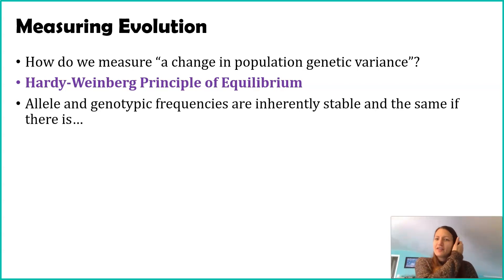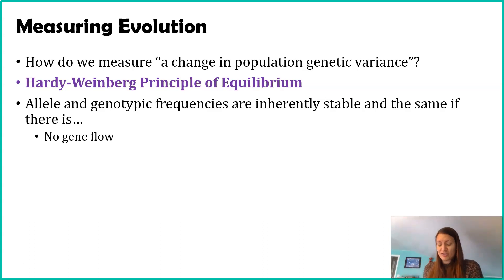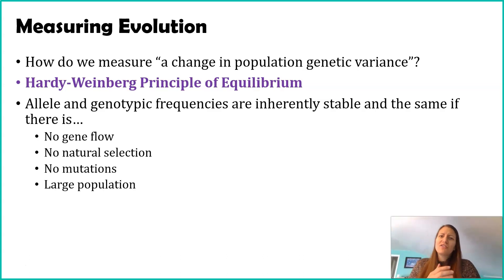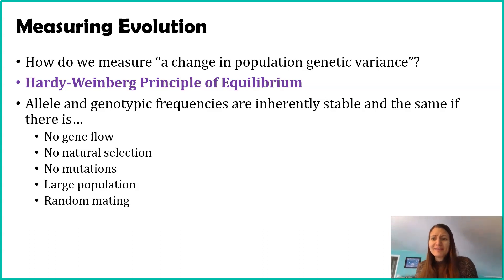The principle states that allele and genotype frequencies are inherently stable — they should stay the same from one generation to the next — as long as certain conditions are met: no gene flow, meaning not a lot of immigration or emigration; no natural selection or selective pressure; no large influx of mutations; a relatively large population (small populations can get skewed through reproduction); and random mating, where every individual has an equal likelihood of mating with every other individual.